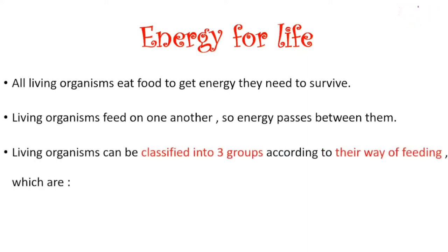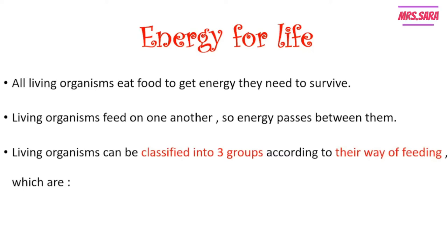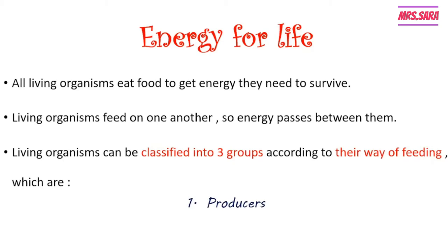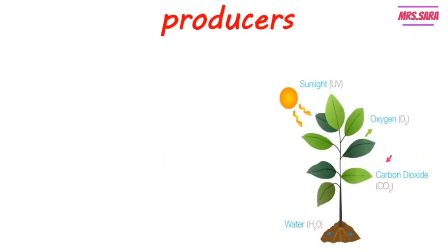Living organisms can be classified into three groups according to their way of feeding, which are: number one, producers; number two, consumers; and number three, decomposers.